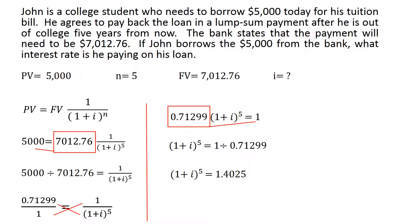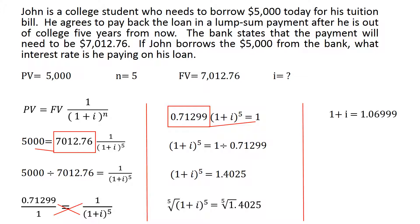We move 0.71299 to the right side by dividing, getting 1.4025, leaving (1 plus i) to the power of 5 on the left. To eliminate the exponent of 5, we take the 5th root of both sides: the left gives us (1 plus i), and the right gives 1.06999. Moving the 1 to the right using subtraction gives us i equals 0.0699, or approximately 6.99% — roughly 7%.